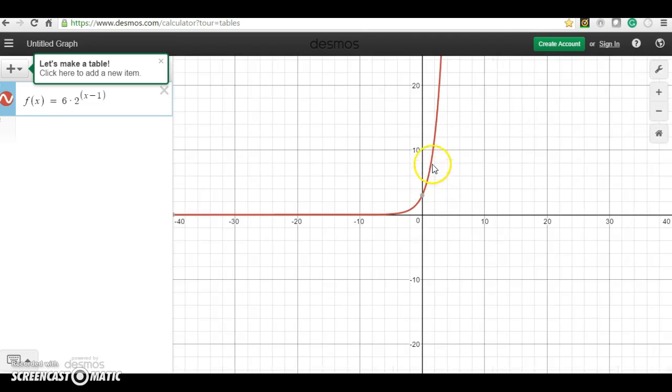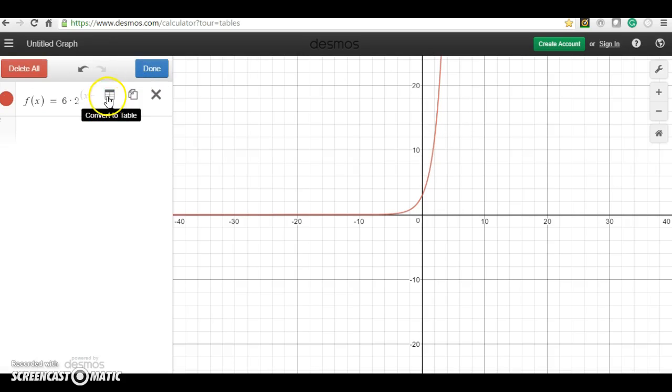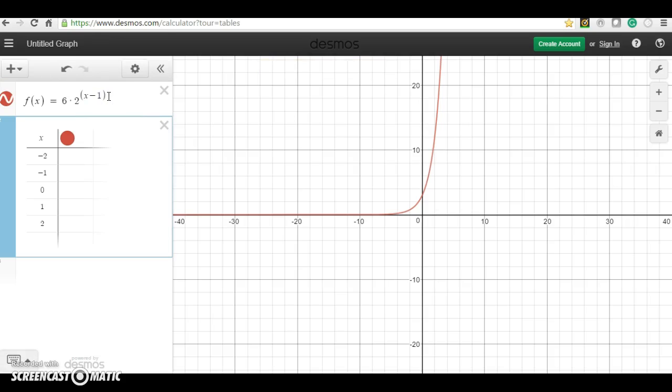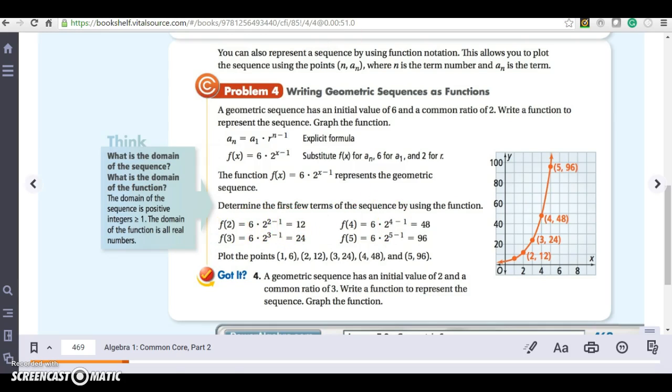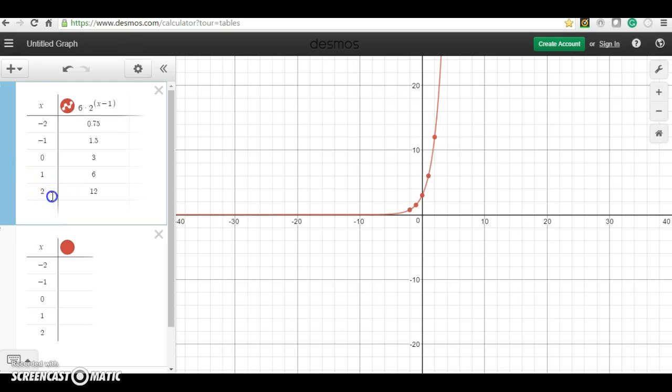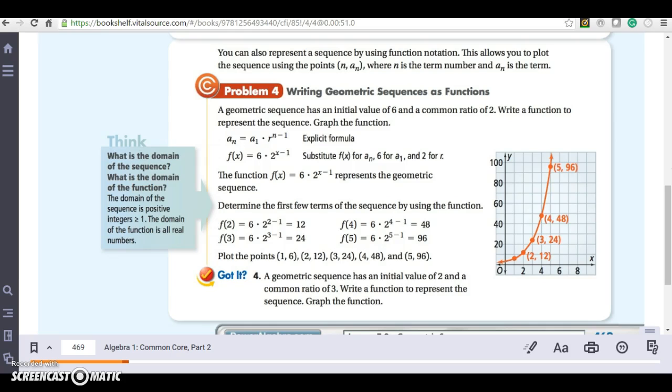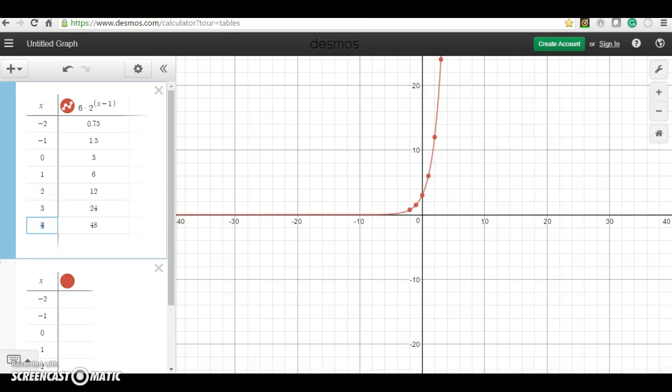I'm going to have to zoom out a little bit. We can actually add a table. There we go. And we see the same points here. So if I plug in 2, I get 12. Plug in 3, I get 24. If I plug in 4, I get 48. And I plug in 5, I get 96.